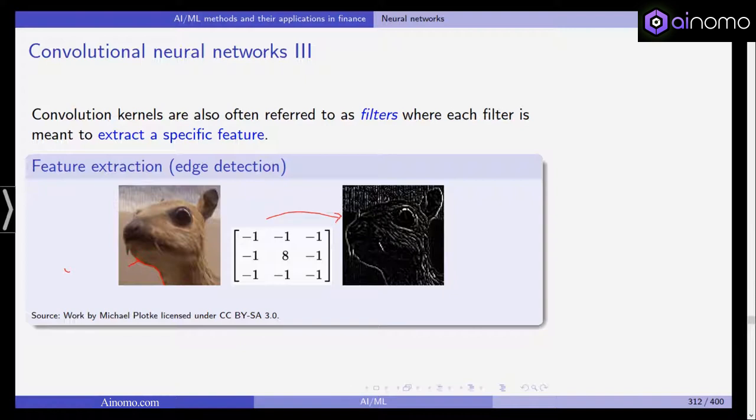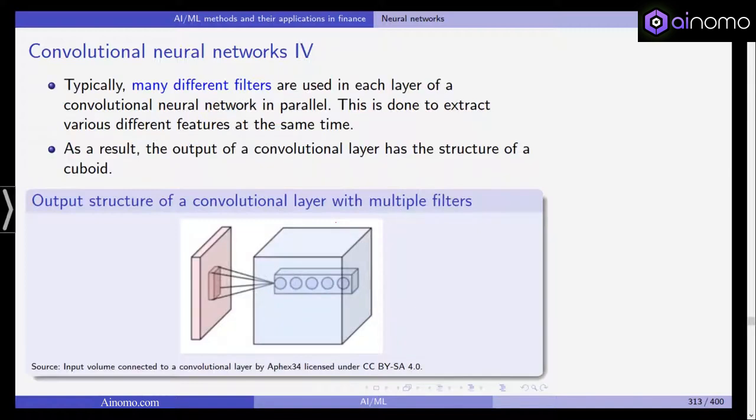This is one layer of information we get, and we can apply many filters to this picture, extract different features, and then learn from this. Typically, many different filters are used in each layer of a convolutional neural network in parallel to extract different features at the same time. As a result, the output of a convolutional layer has the structure of a cuboid. You get multiple filters, and then you can recombine them to get a full idea of what the picture looks like and train your neural network.